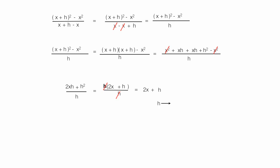So now I'm left with 2x plus h. Now remember, h is really close to zero, so we can pretty much just ignore it here. So the slope, or the first derivative, is equal to 2x.